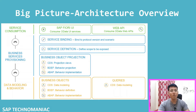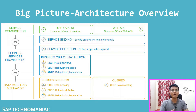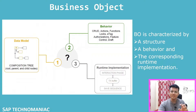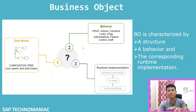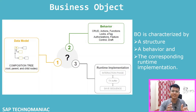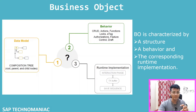In that video, we focused on the first part - data modeling and behavior - and more specifically on the business object itself. Many developers start RAP without learning BOPF first, so we tried to understand what a business object actually is. We covered the different parts: data model, behavior, and runtime implementation, focusing on the data model - root entity, parent and child entities, associations, and compositions.